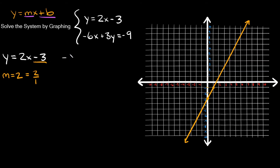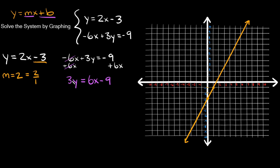Now convert the second equation, negative 6x plus 3y equals negative 9, into slope-intercept form. Add 6x to both sides — the 6x terms cancel, leaving 3y equals 6x minus 9. Divide everything by 3: y equals 2x minus 3.